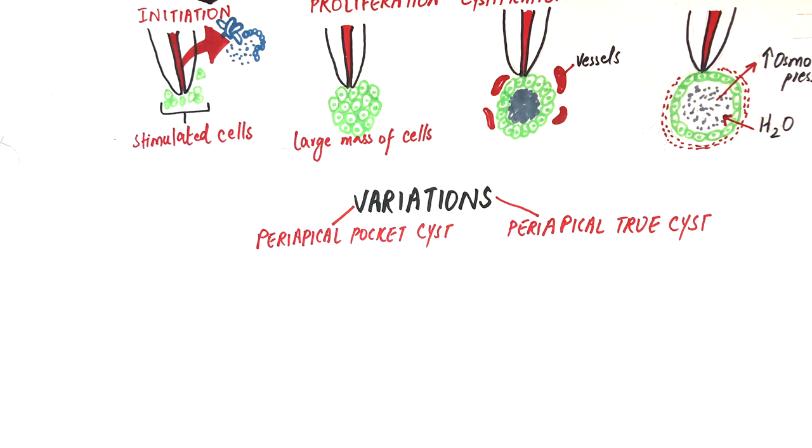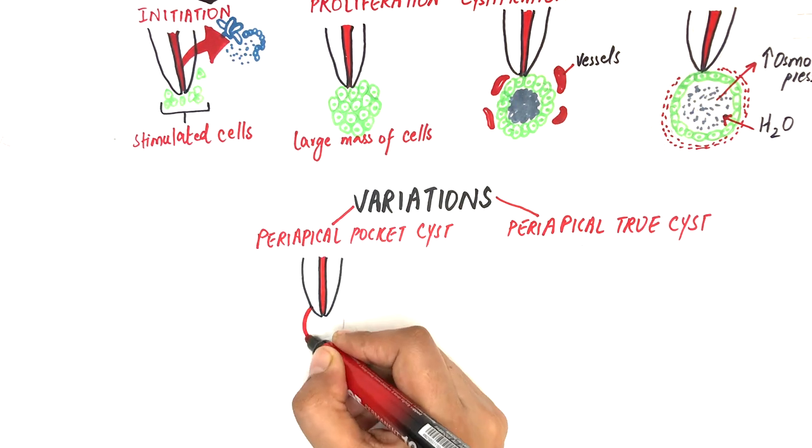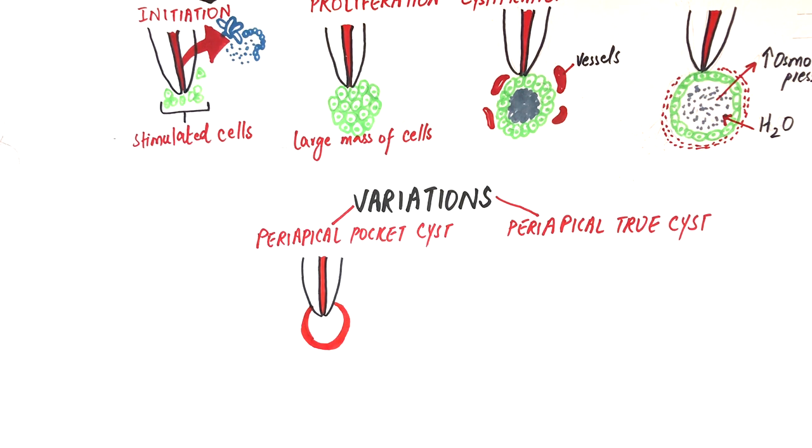Periapical pocket cyst is characterized by an incomplete epithelial lining around a tooth apex. This incomplete epithelial lining of the cyst results from extension of the apical portion of the root into the lesion.